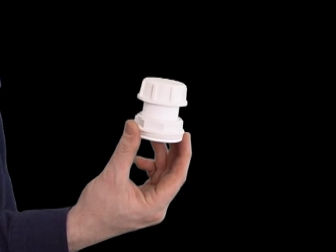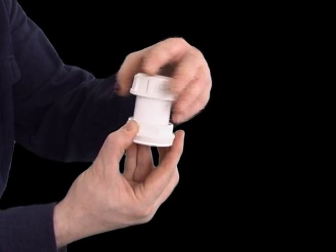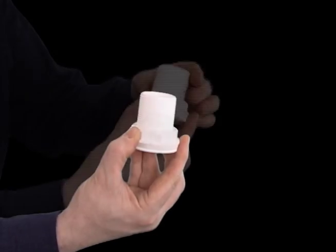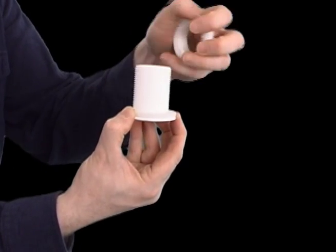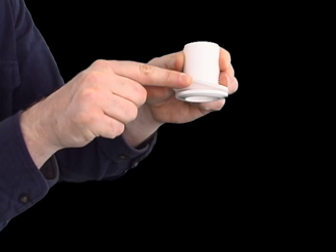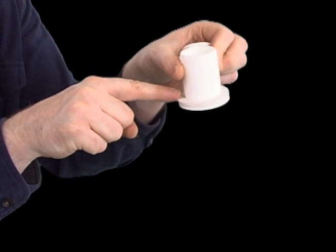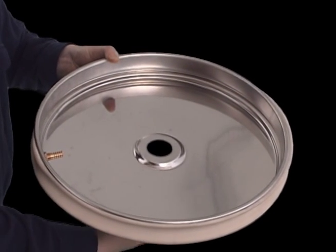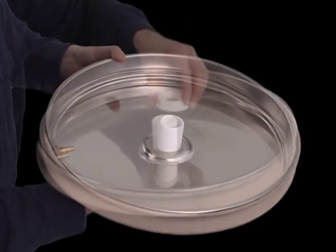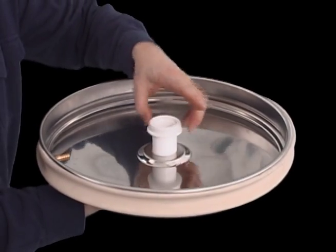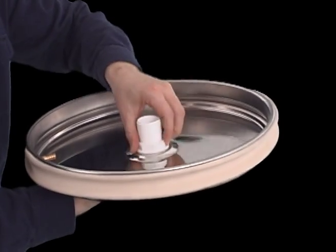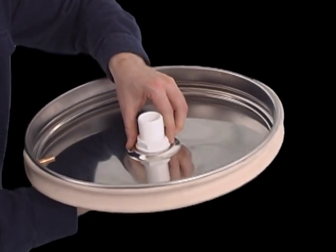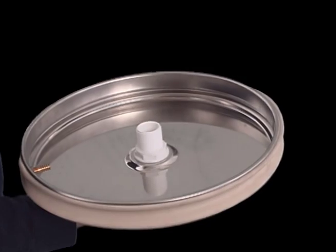To attach the airlock to the lid, begin by removing the end cap. Next, remove the large retaining nut. It's important to leave the gasket in place as this will be what makes the seal against the lid when we install it. Insert the airlock into the lid from underneath. Then, attach the retaining nut and screw it all the way down until it is nice and snug. This pulls the gasket on the other side of the airlock tight against the lid so it can make a good seal.